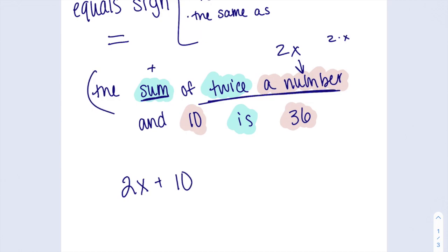The second part says is 36. This is our new part. This is where we see the equal sign coming in. So the sum of twice the number in x or 2x plus 10 equals is 36. In less than a week, we will be able to solve this. You might even be able to solve this right now. But today we're just focusing on how do we write these things.